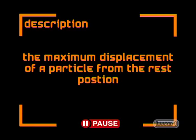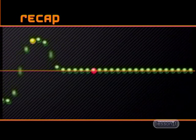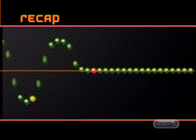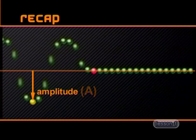The maximum displacement of a particle from the rest position — to the top of the crest or from the rest position to the bottom of the trough — is the amplitude of the wave. The symbol for amplitude is capital A.